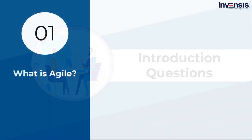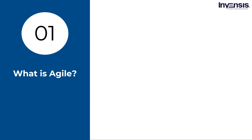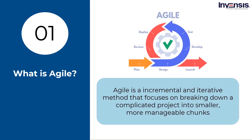Starting with our first question: What is Agile? Agile refers to a set of principles applied to software development and project management. It's a well-known incremental and iterative method that focuses on breaking down a vast and complicated project into smaller, more manageable chunks that can be finished in smaller iterations. Agile is a collaborative strategy used to complete work quickly, adapt to changing demands, and optimize workflow.